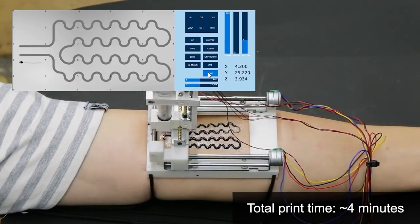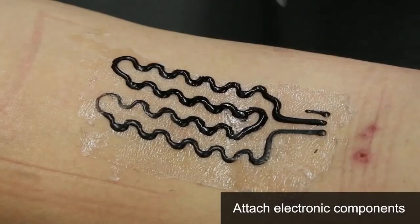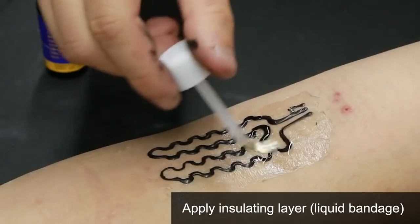After printing, the plotter is removed and necessary electronic components are attached while still drying with optional insulation.